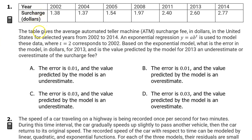Number 1. The table gives the average ATM surcharge fee in dollars in the United States for selected years from 2002 to 2014. An exponential regression is used to model these data, where t equals 2 corresponds to 2002. Based on the exponential model, what is the error in the model in dollars for 2013? And is the value predicted by the model for 2013 an underestimate or an overestimate of the surcharge fee?